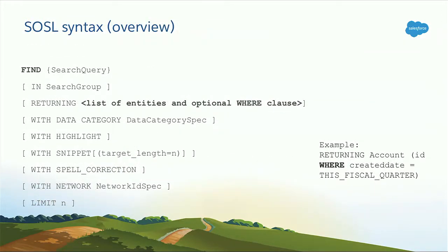Here's a flavor of the SOSL syntax — the full syntax is in the help documentation. You have the search query we saw, plus you can specify a WHERE clause to filter your results further. For example, I can say I want all accounts but filter on creation date to be this fiscal year. You can turn on and off highlighting — we return exactly the terms that match in the record so you know where they are. You can enable or disable snippet for most entities — like web search, you get a small extract showing you where the words were found, giving users more context. You can also turn on and off spelling correction and other constructs.